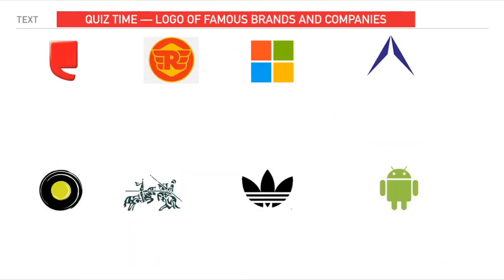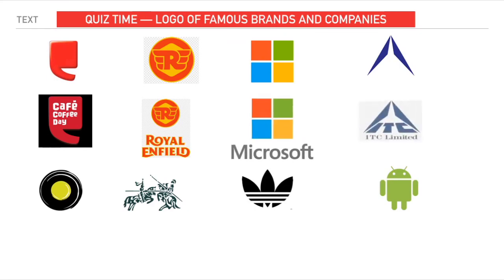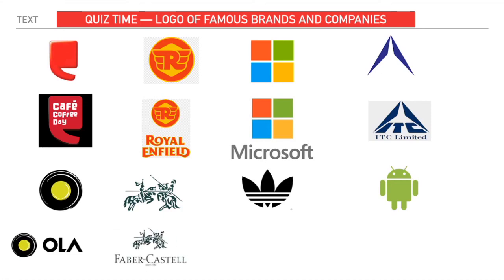Quiz round two: First is Cafe Coffee Day. Second is Royal Enfield. Third is Microsoft. Fourth is ITZ, a Calcutta-based company. Fifth is OlaCabs. Sixth is Faber-Castell. Next comes Adidas. And last is Android.